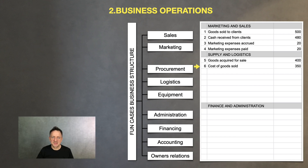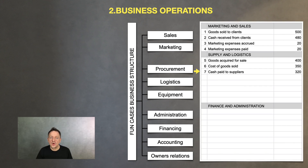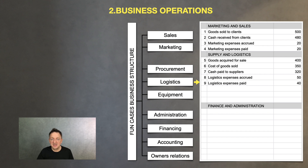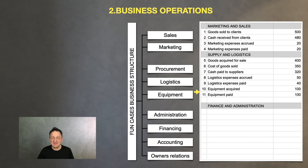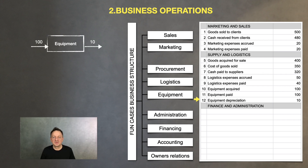We acquired goods for sale for $400K. They arrived at the warehouse, but cost of goods sold was $350K. That means our inventory should increase by $50K or so. While we bought goods for $400K, we paid our suppliers just $320K. My logistic expenses were $50K accrued and only $40K paid, so we accumulated our expenses debts. And I have good news that we finally bought the long-awaited new equipment for $100K and it was fully paid.